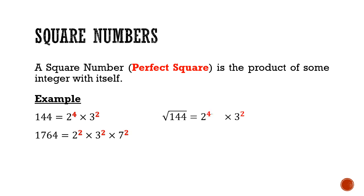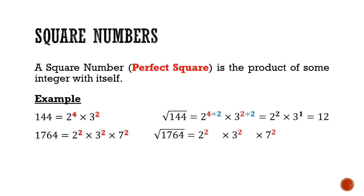Let's take the square root of 144. What we do is divide the indices of each prime factor by 2. This gives us 2 squared times 3, which multiplies together to give 12. Similarly, for the square root of 1764, if we halve all the indices, we get 2 times 3 times 7, which is 42.